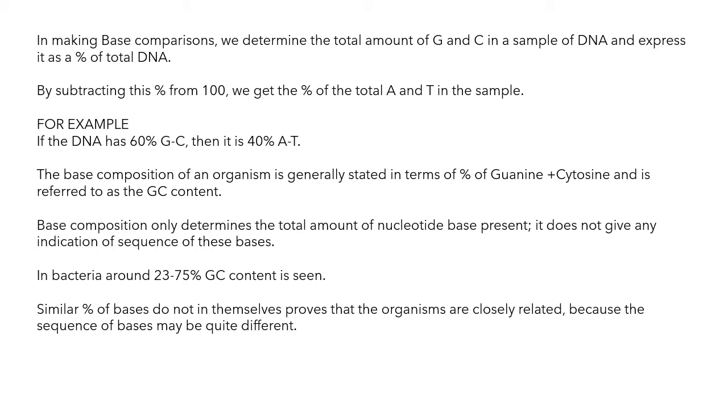By subtracting the GC percentage from 100, you get the percent of total A and T in the sample. For example, if the DNA has 60% GC, then it is 40% AT.